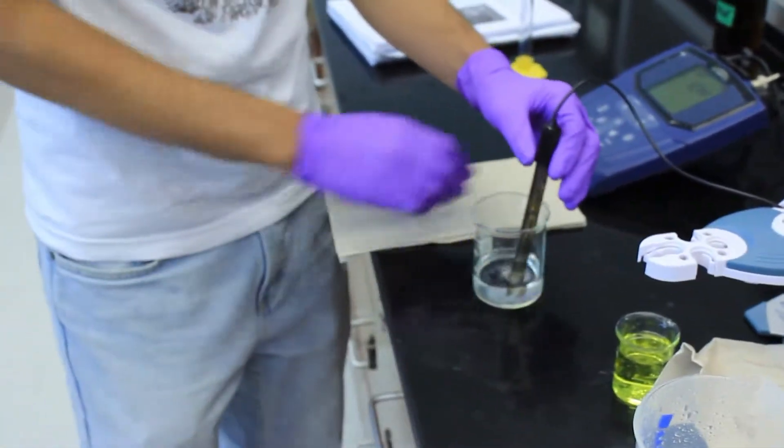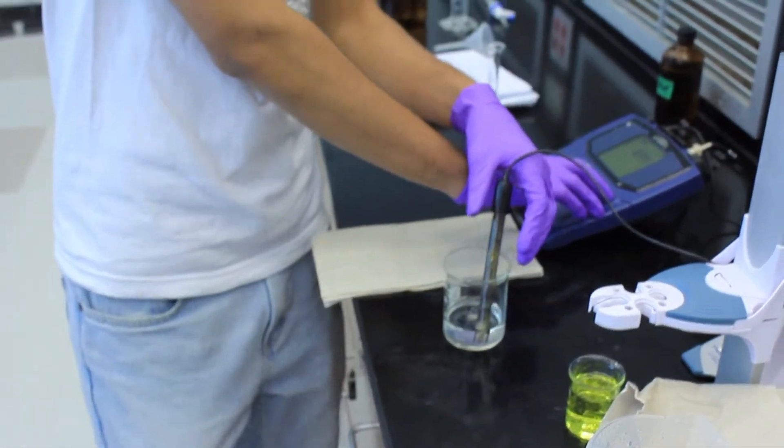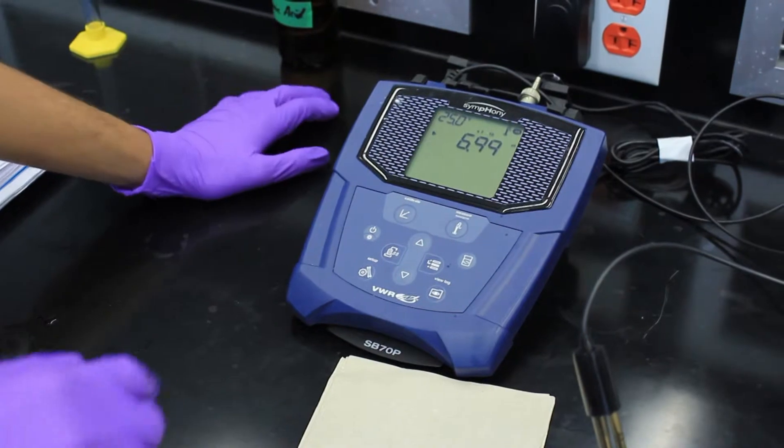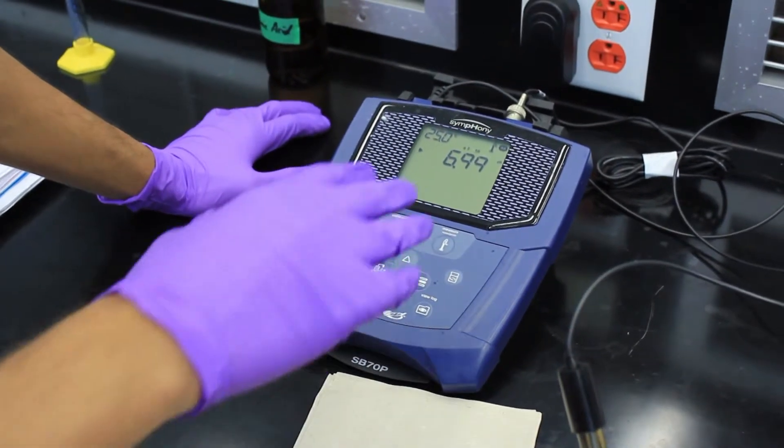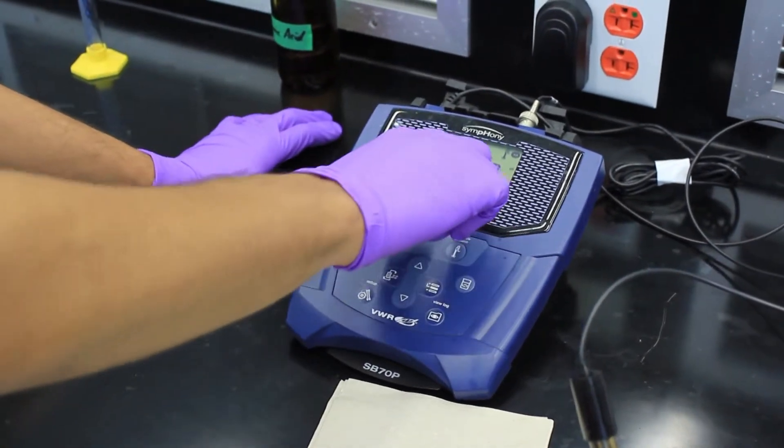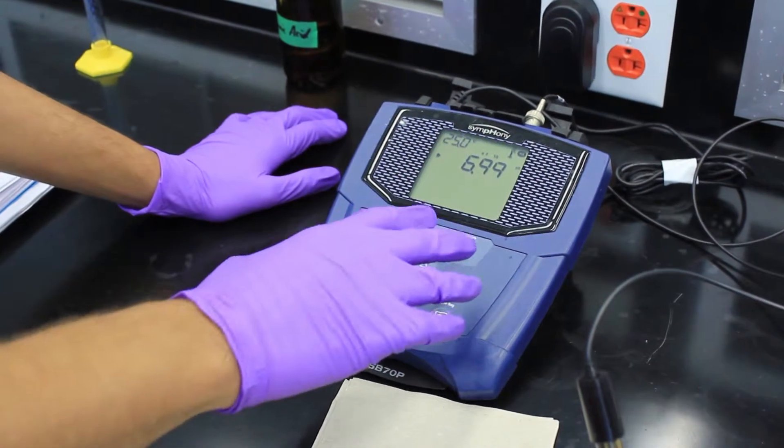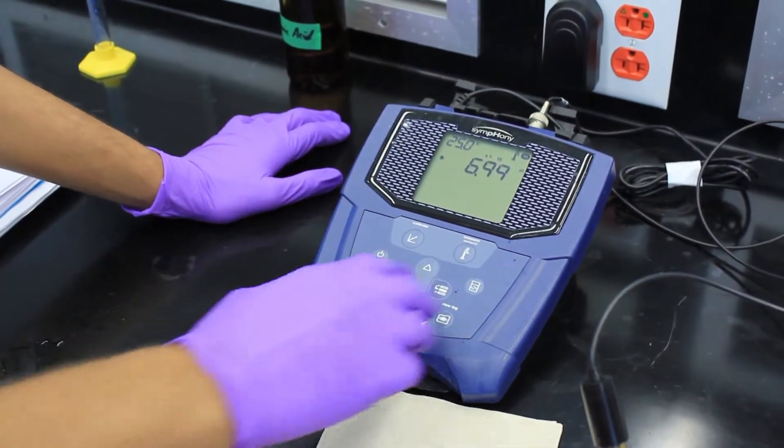Insert it into your solution. The way the Symphony pH meter works is that it's already calibrated, so whenever 4, 7, and 10 show up right above the pH, that means it's calibrated.